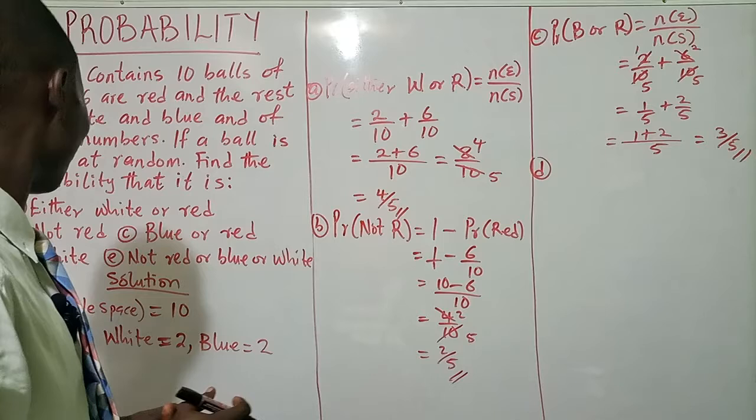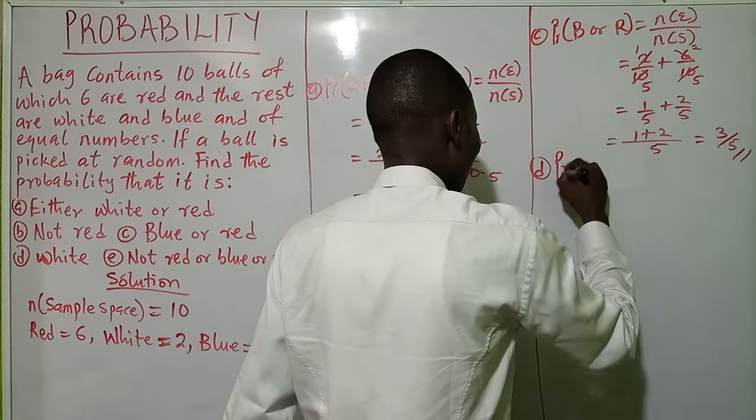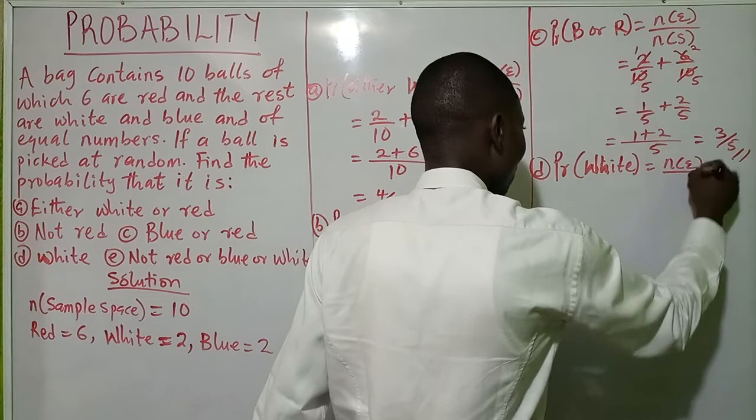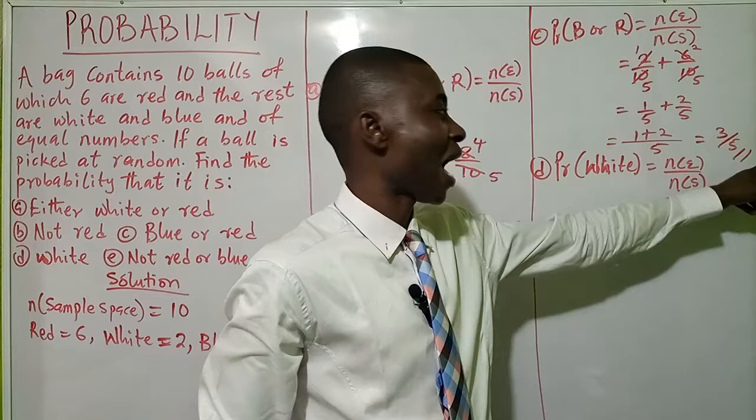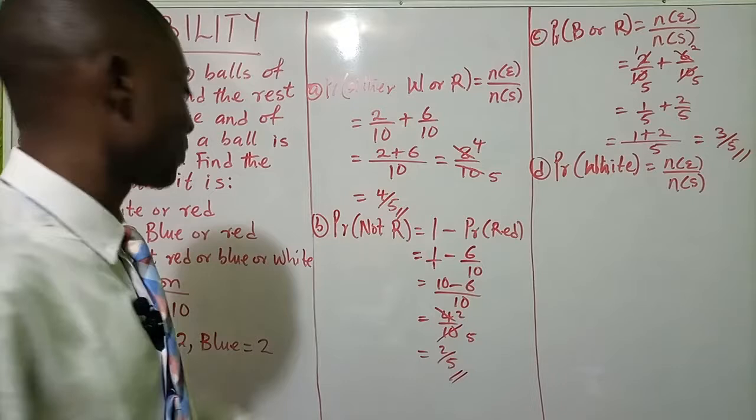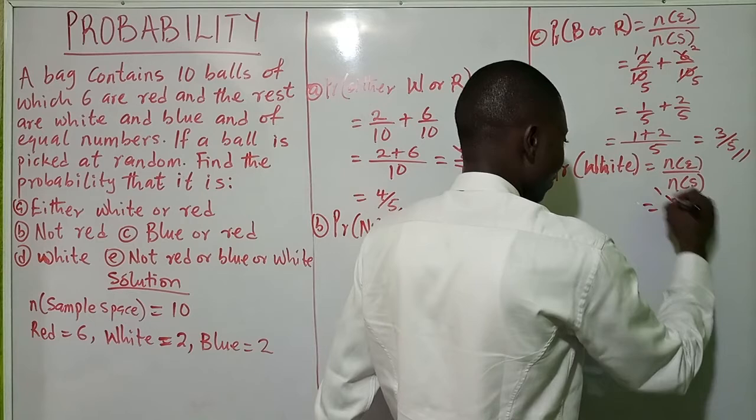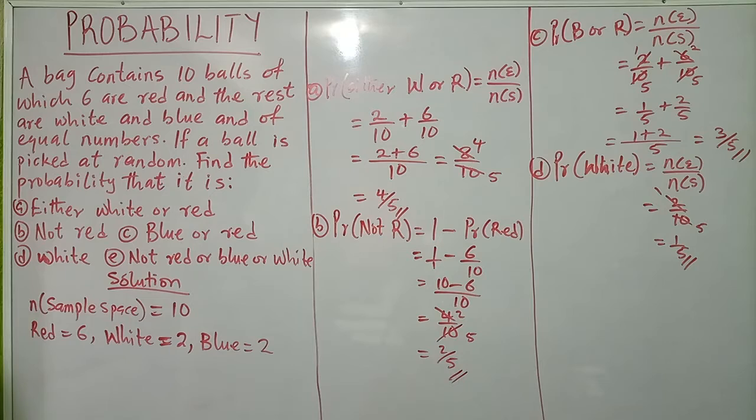Part D: probability of picking a white ball. Number of expected outcomes over total outcomes: how many white balls do we have? Two. So that is two over ten, which simplifies to one over five. Very simple, not difficult at all.